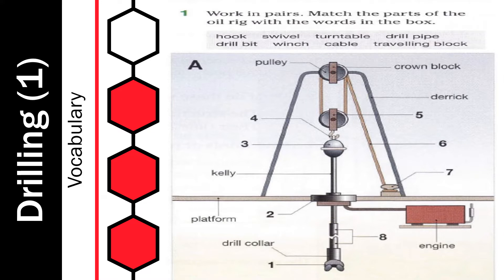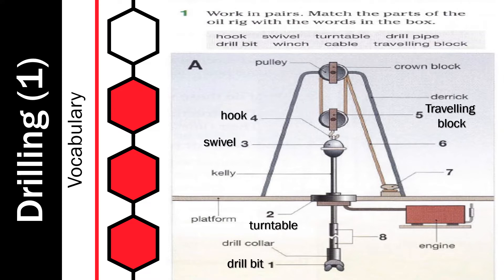Now let's see what each part is called. Number 1 is the drill bit. Number 2 is the turntable. Number 3 is the swivel. Number 4 is the hook. Number 5 is the traveling block. Number 6 is the cable. Number 7 is the winch. And number 8 is the drill pipe. Well done.